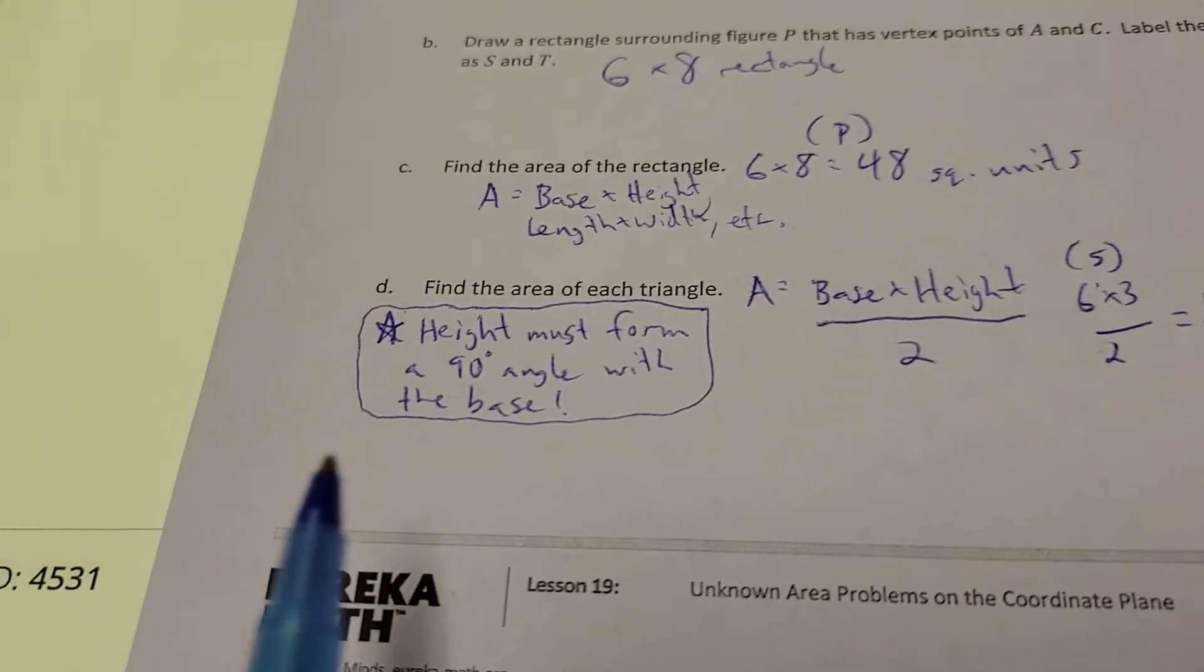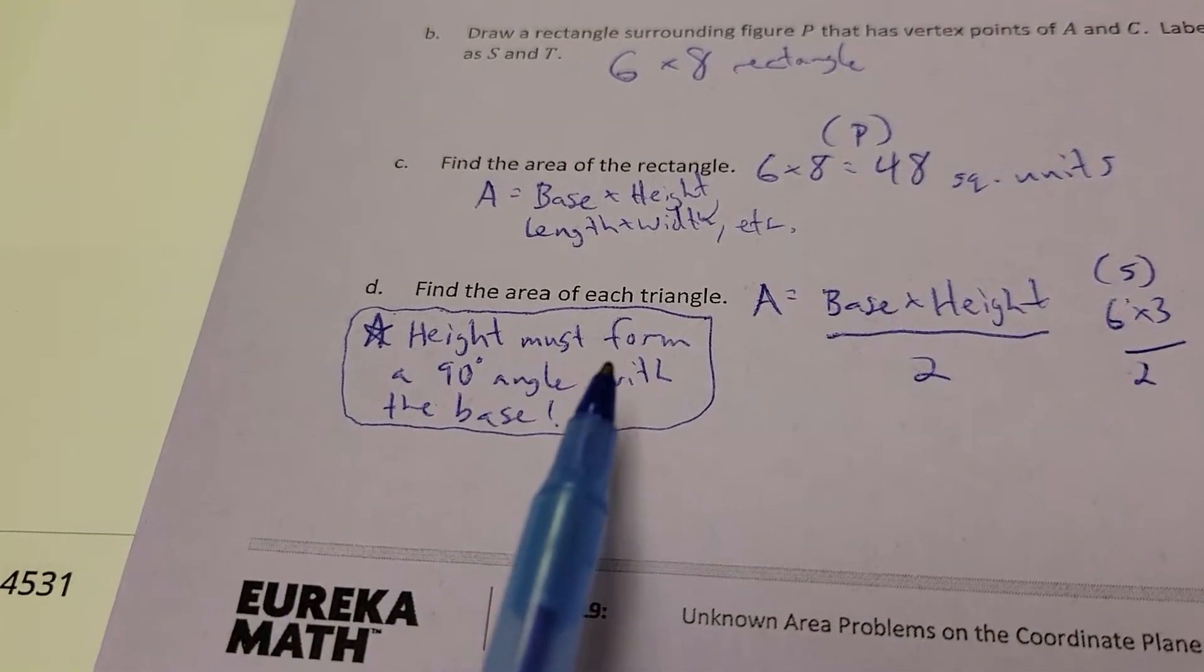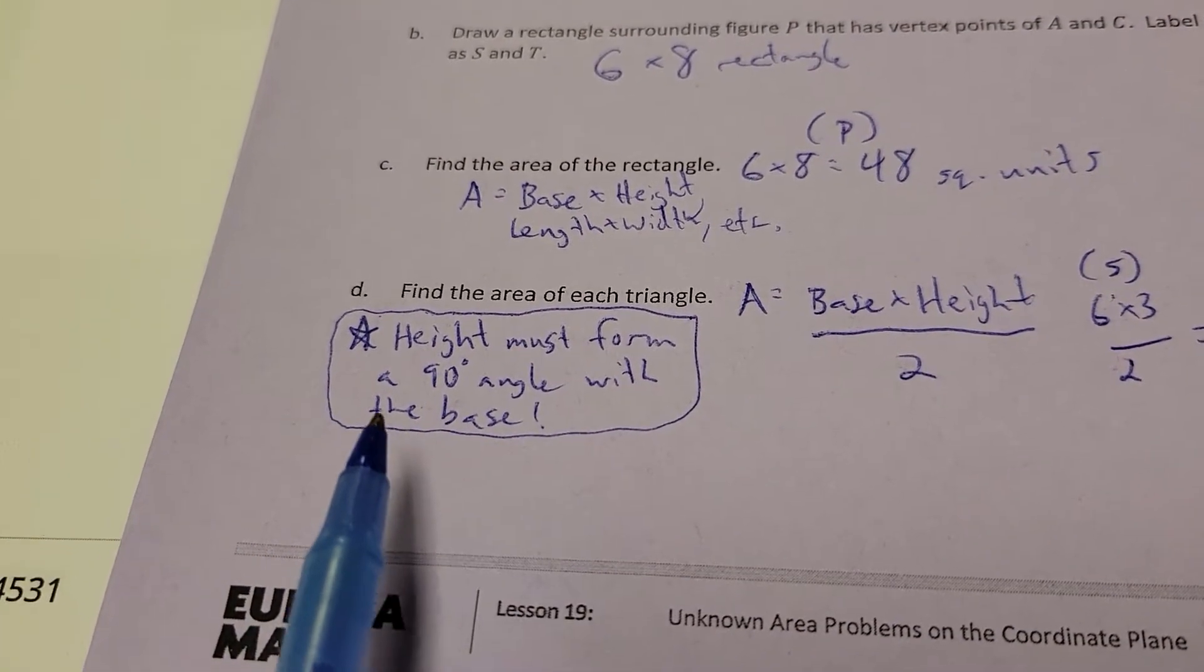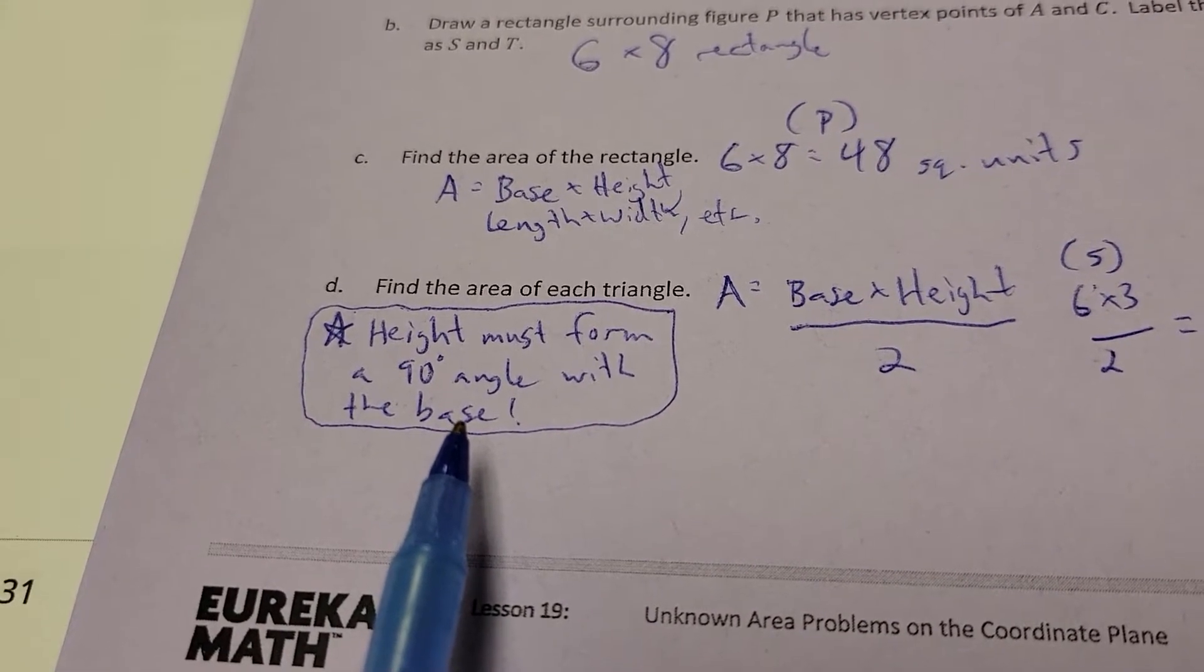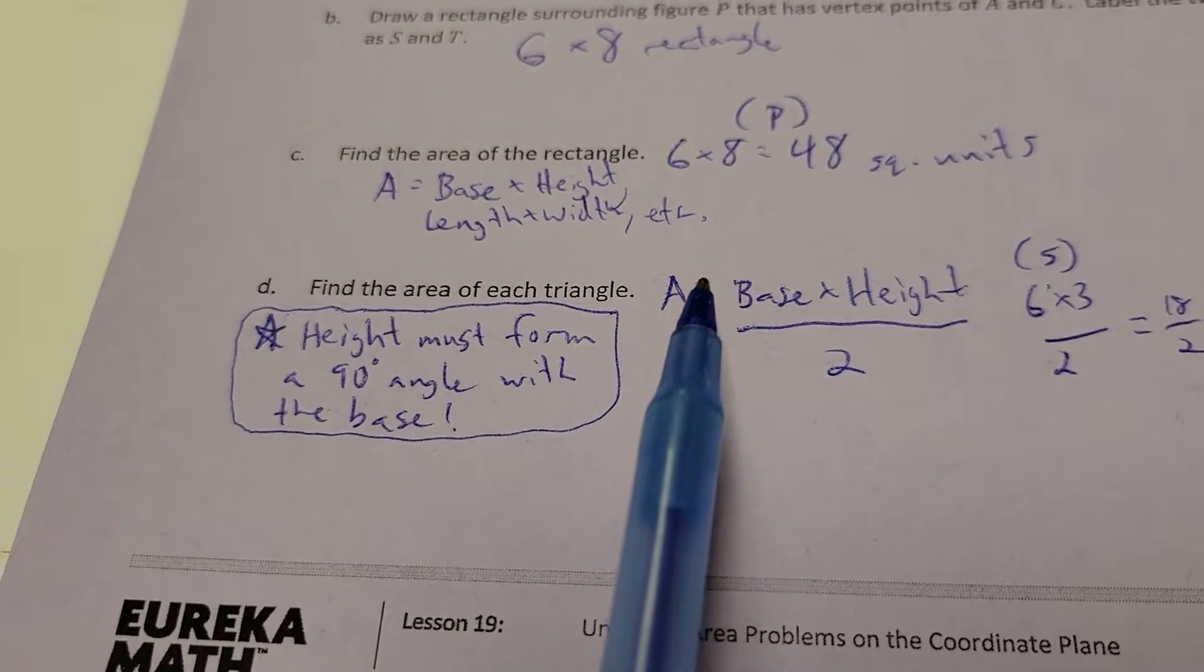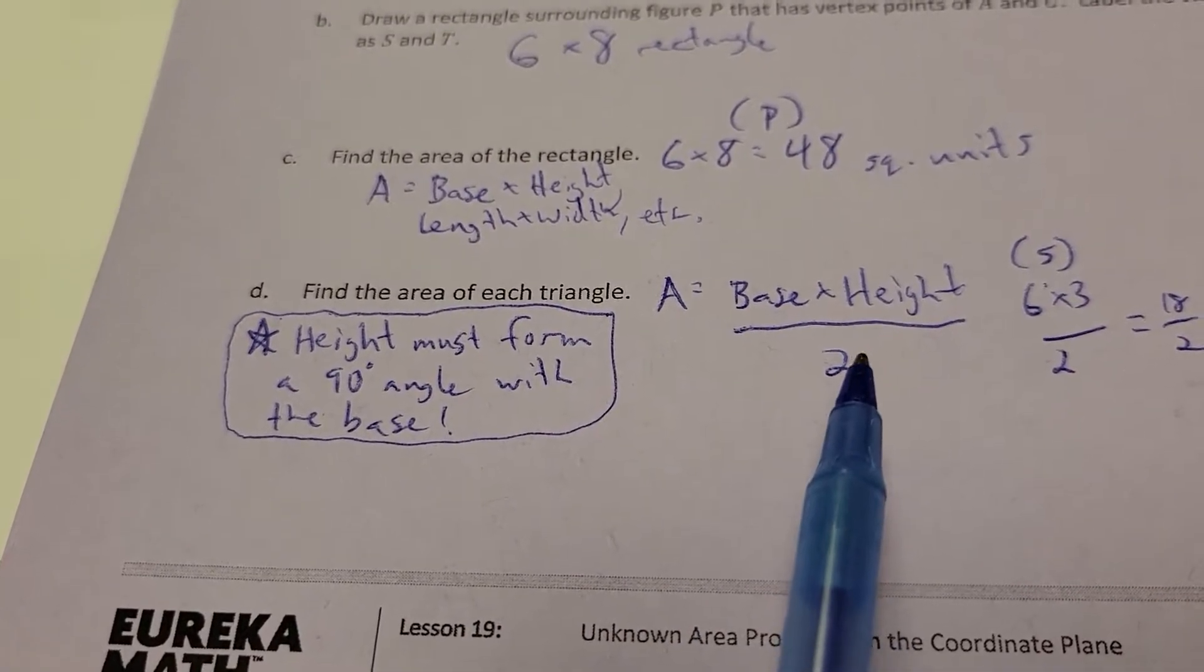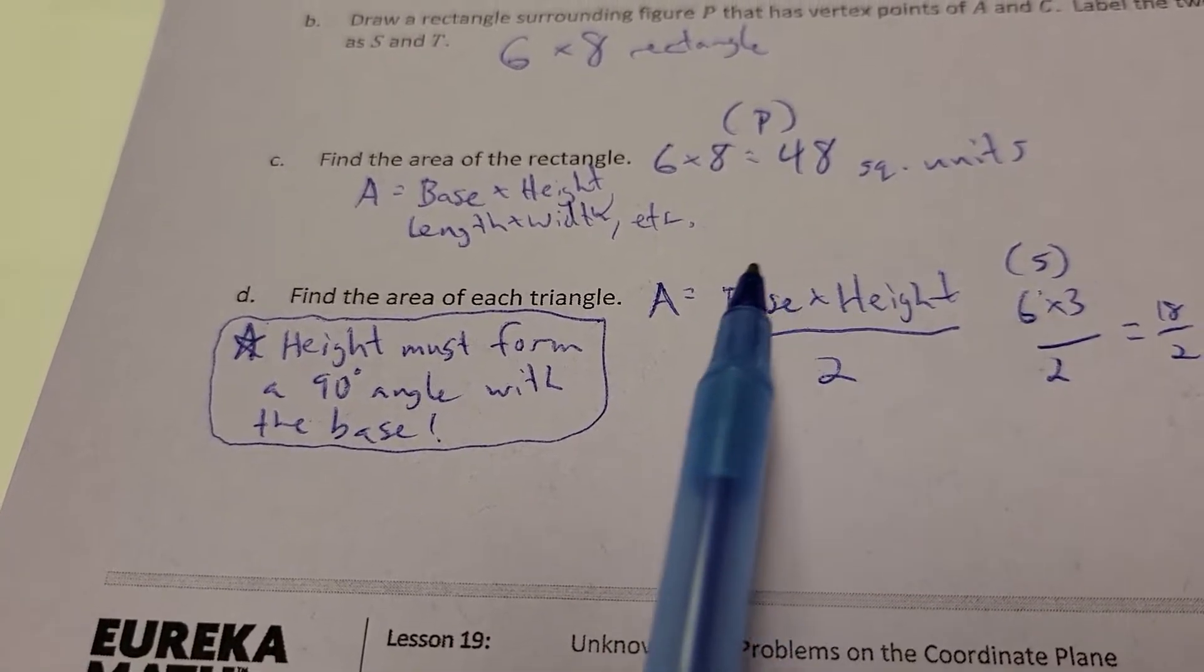Now find the area of each triangle. Now this is a big deal. Height must form a 90 degree angle of the base. So when you measure the height of the triangle, you've got to somehow figure out where there's a 90 degree measurement, where it forms like a perfect T shape. Now remember, with a triangle, though, it is base times height divided by 2. That's the formula for a triangle, something from 6th grade.